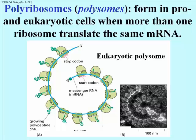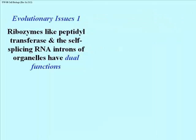This is a typical eukaryotic polysome in the electron micrograph, as you might see it at very high power. Let's talk about a few evolutionary issues. The first one is that the peptidyl transferase we talked about during elongation is a ribozyme. The catalytic activity of transferring the growing polypeptide to the new amino acid in the A site resides exclusively in one of the ribosomal RNAs, very much like the RNA-based self-splicing of introns from the messenger RNAs of organelles like mitochondria and chloroplasts.